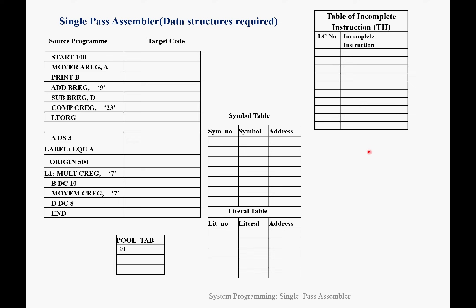Symbols and literals get addresses after the LTORG statement or DS/DC set statement for symbols. The table of incomplete instructions has data structure: LC number and incomplete instruction name. Symbol table data structure: symbol number, symbol name, address. Literal table: literal number, literal name, and address. Pool table is required if our source program has multiple pools — pools are identified by the LTORG statement. This is our source program for which we will generate target code.